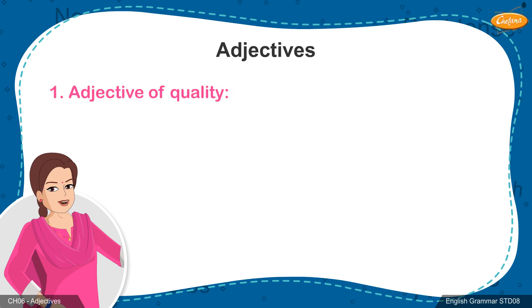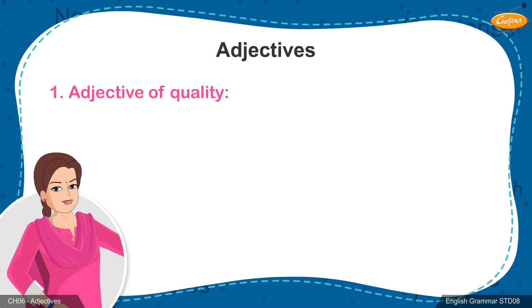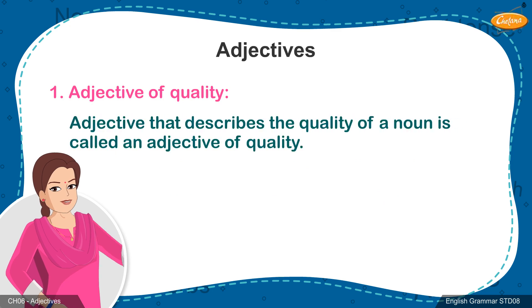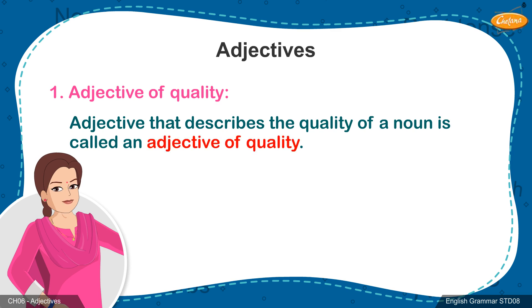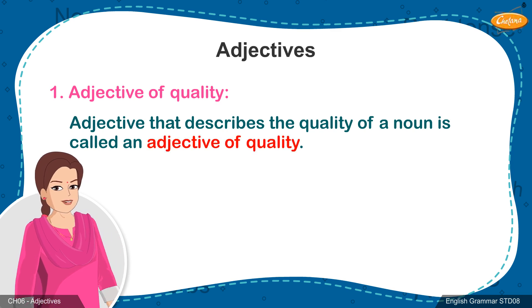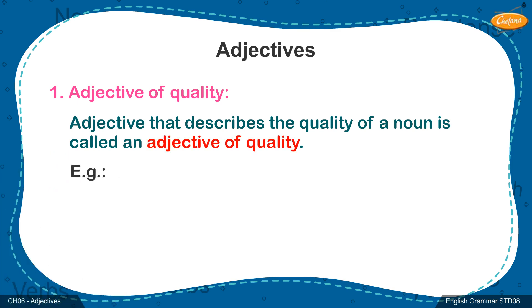The most common understanding of an adjective is when it describes the quality of a noun, as in the exercise we just did. This kind of adjective is called an adjective of quality. Here are some examples of these kinds of adjectives.